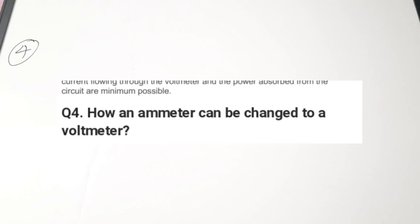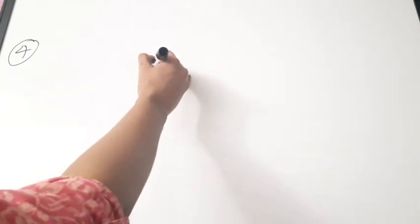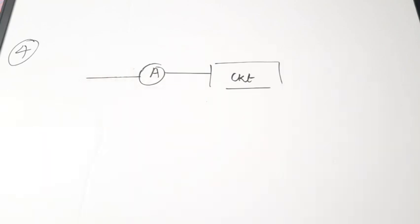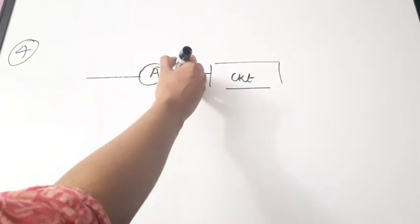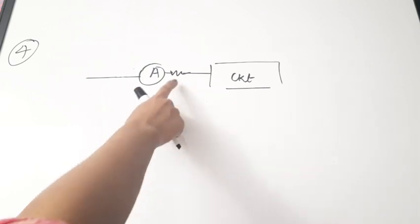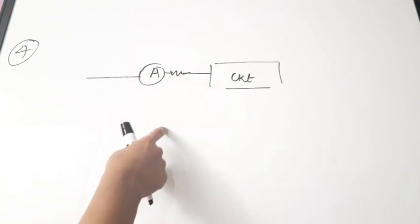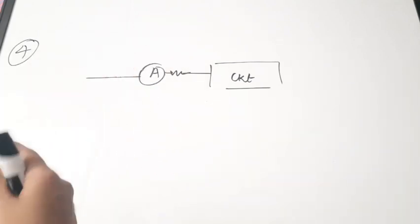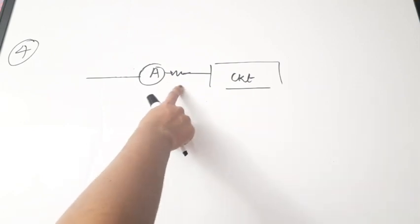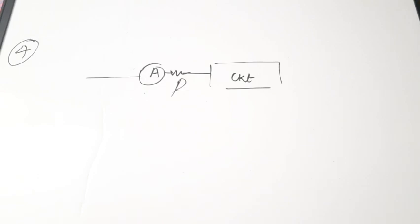The next question is: how can an ammeter be changed to a voltmeter? Consider an ammeter connected in series with a circuit. To convert it into a voltmeter, we connect a high resistance in series with this ammeter. A lower-range ammeter can be converted into a voltmeter by connecting a high resistance in series, provided the current flowing through this series combination stays within the measurable range of the ammeter.